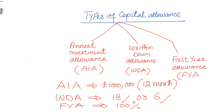There are three types of capital allowances. The first type is AIA, which is Annual Investment Allowance. The second type is WDA, that is Written Down Allowance. The third type falls in the category of First Year Allowance, FYA. There are different rules regarding all types and on which items of expenditure you can claim AIA, WDA, and First Year Allowance.